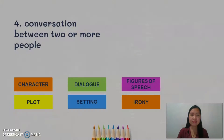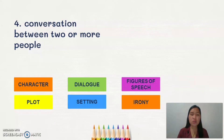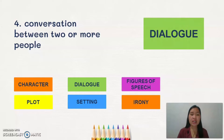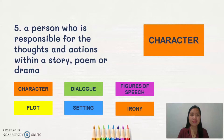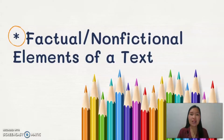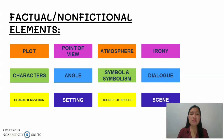What about number four? This is the conversation between two or more people. Number four refers to dialogue. And for number five: this is a person who is responsible for the thoughts and actions within a story, poem, or drama. The correct answer is character. Congratulations! Now let us proceed to the factual and non-fictional elements of a text. There are actually many, but for this time we'll only be discussing twelve of these. And since some of these elements were already discussed in our previous subject creative writing, only six of these will be discussed this time.